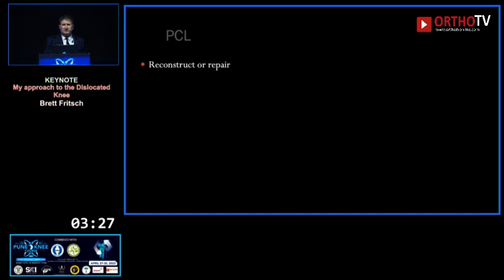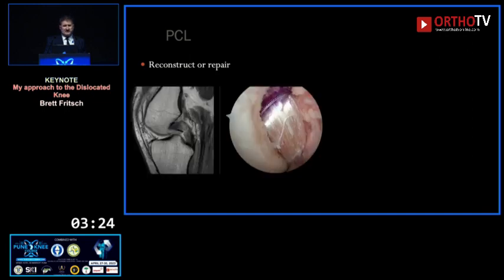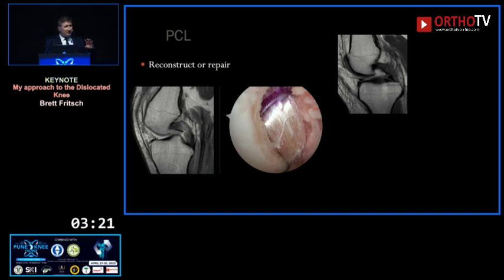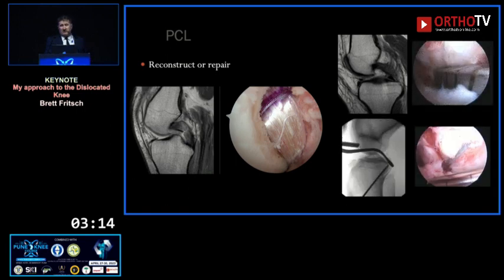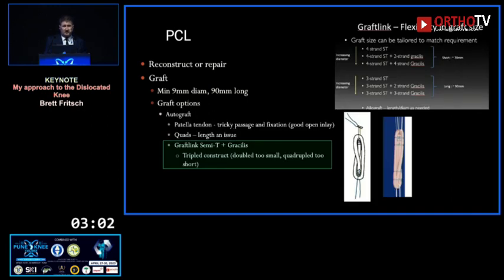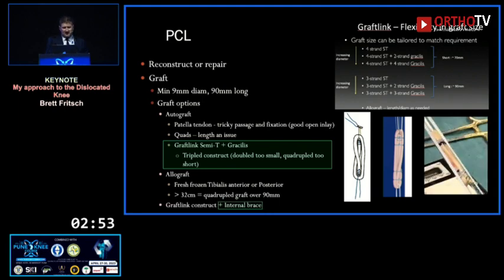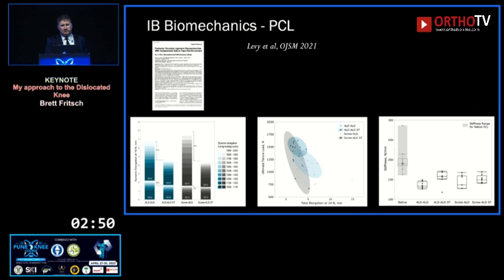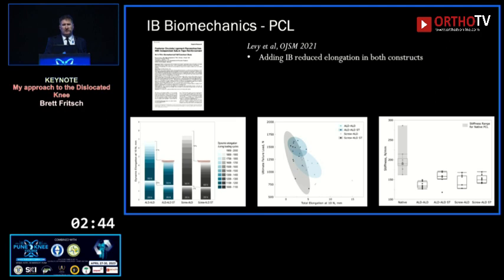For PCLs I do a mixture of reconstruction and repair. Full transections need a full reconstruction, but there's a pattern of highly stretched-out, damaged PCLs with a grade two to almost grade three that I used to manage non-operatively — now I pass an internal brace and internally splint it so I can do better rehab. The graft needs to be bigger and longer than for an ACL. I tend to use either an allograft or a tripled semitendinosus — you need it long, can't achieve that with a quadrupled one, can't get the diameter with a doubled one, so you triple it, and I add the internal brace.